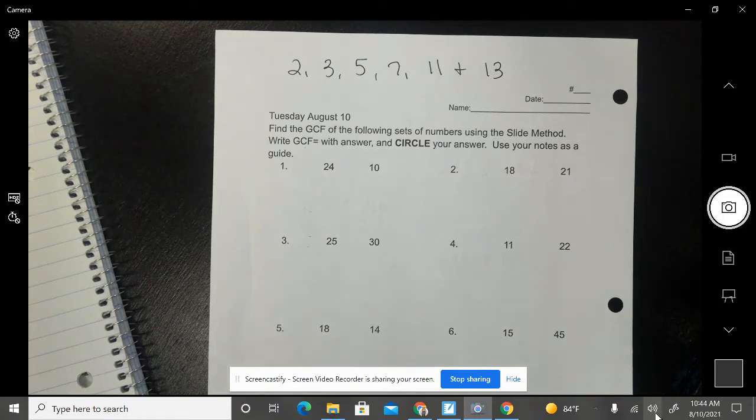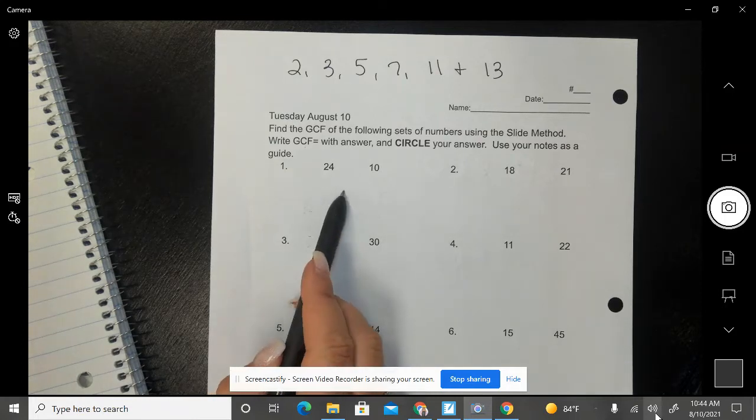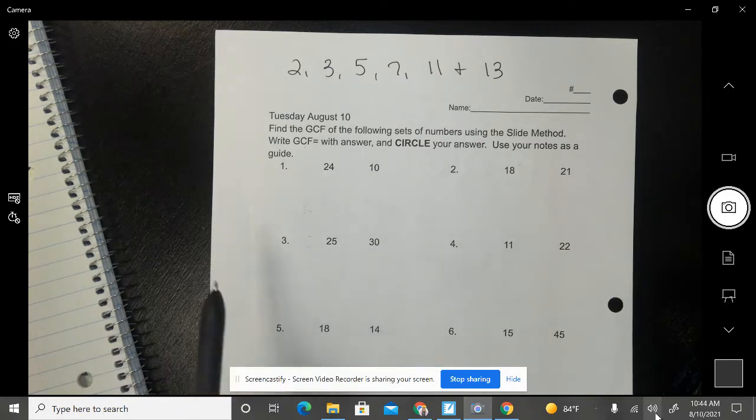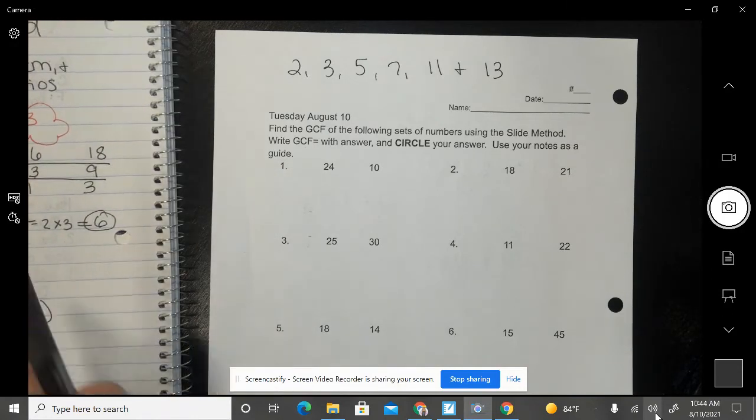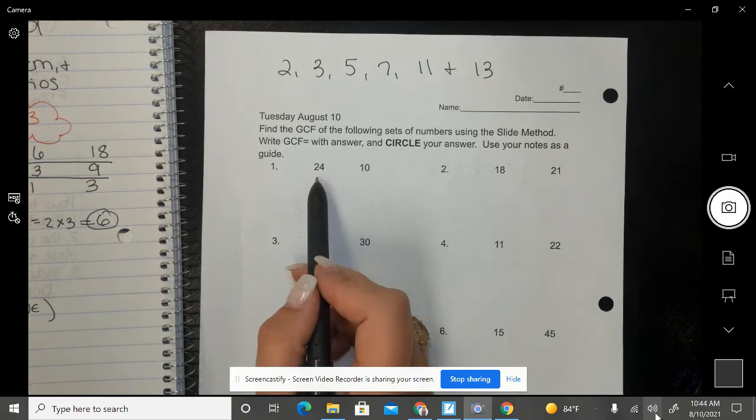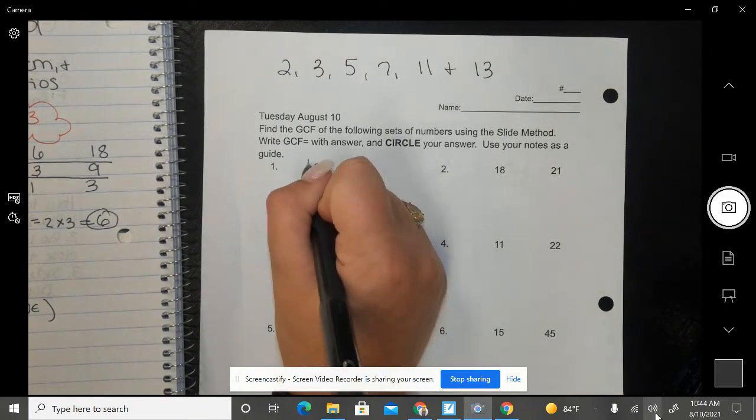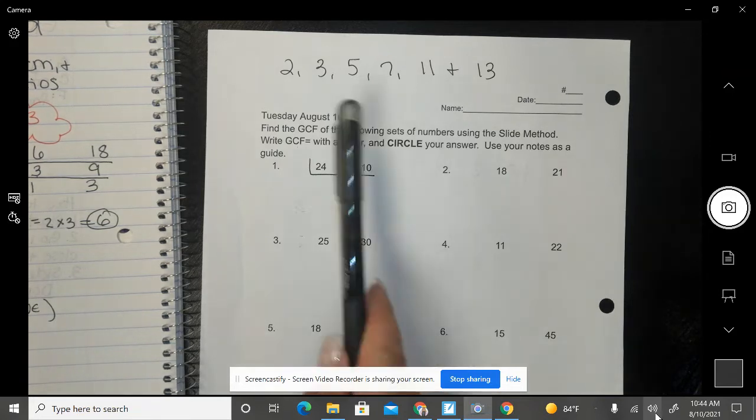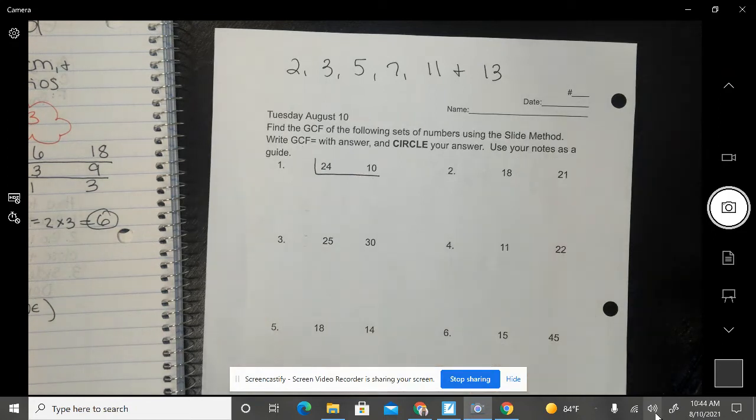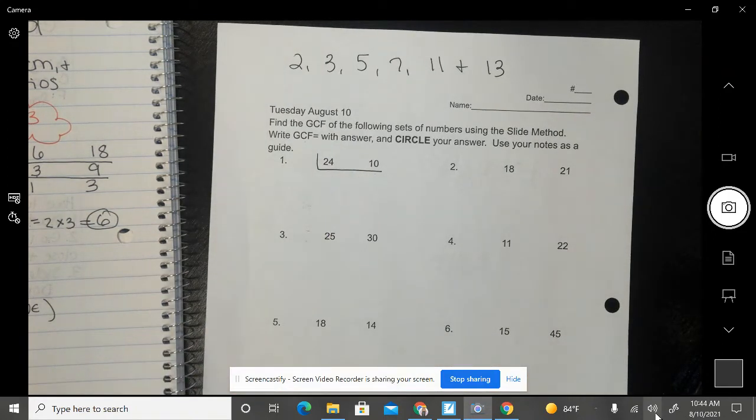So I'm going to start off by trying number one. So my first step is place the numbers in the slide. If I go back to my steps it's place the numbers in the slide. So the numbers are already separate for you so I'm just going to draw the slide. The second step in my notes says find the common factors using the list. This is the list right here. What factors do these two numbers have in common?